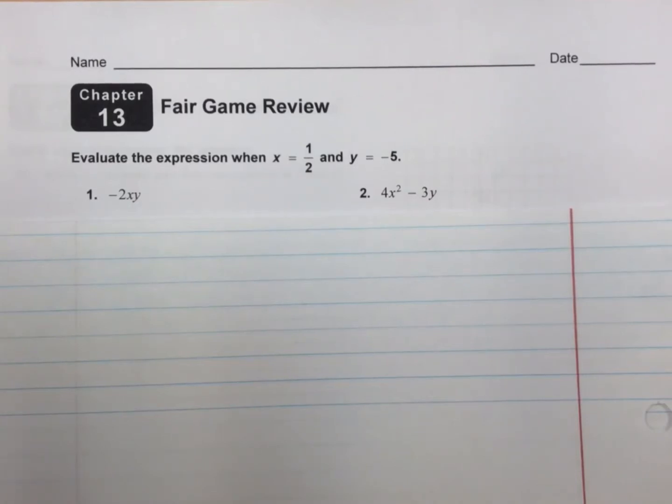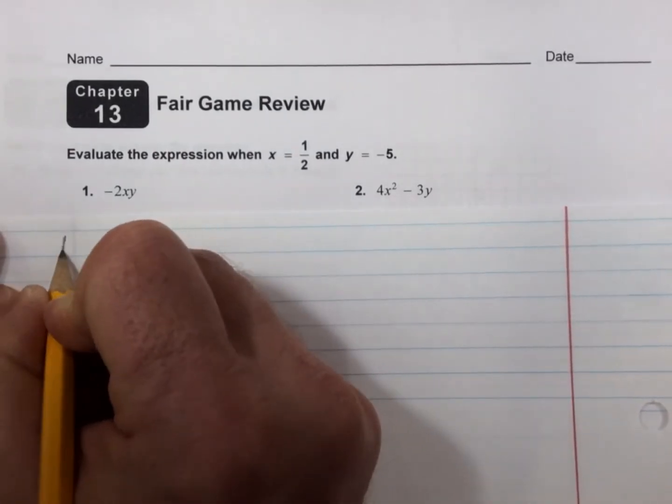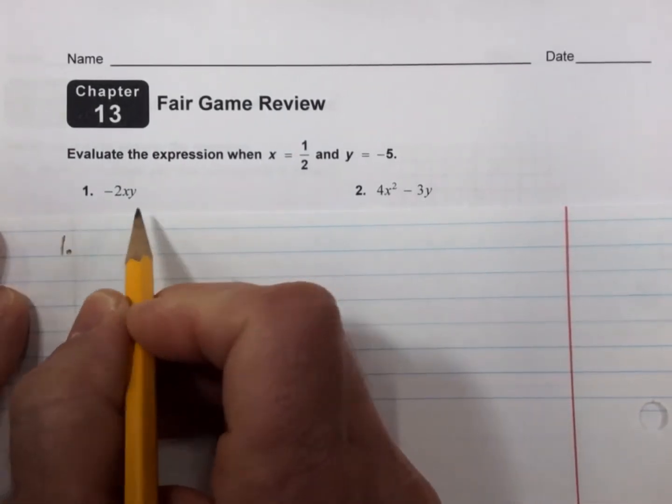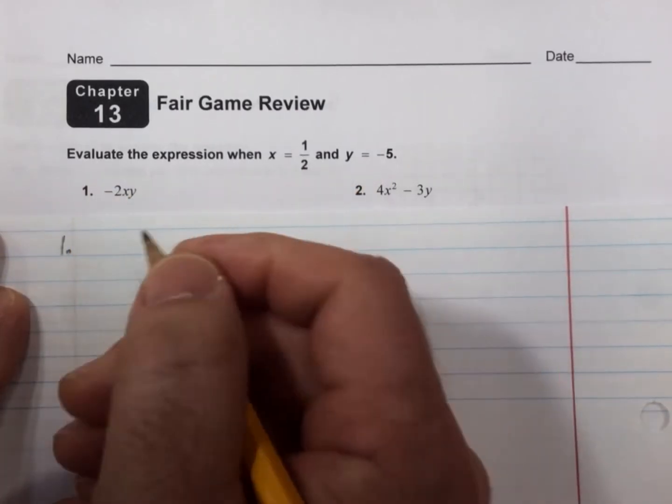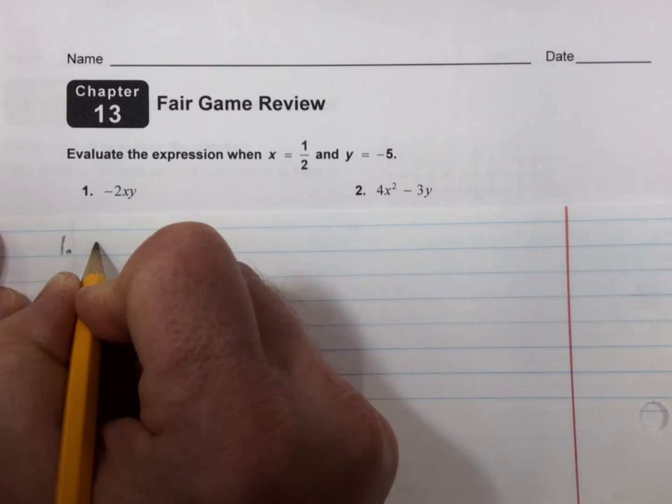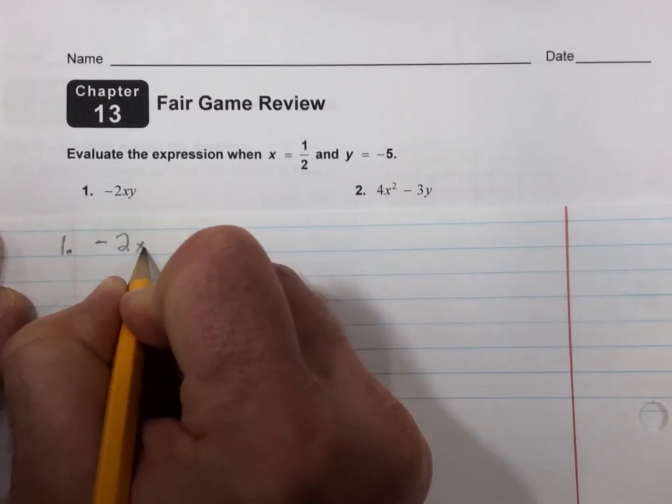Hey, this is chapter 13, Fair Game Review, journal page 291 and 292. Number 1. We're supposed to evaluate the expression when x is 1/2 and y equals -5. So -2xy.